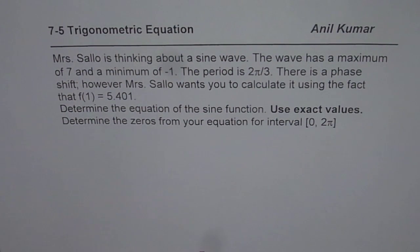The question here is: Mrs. Sello is thinking about a sine wave. The wave has a maximum of 7 and a minimum of minus 1. The period is 2π/3. There is a phase shift, however Mrs. Sello wants you to calculate it using the fact that f(1) = 5.401.